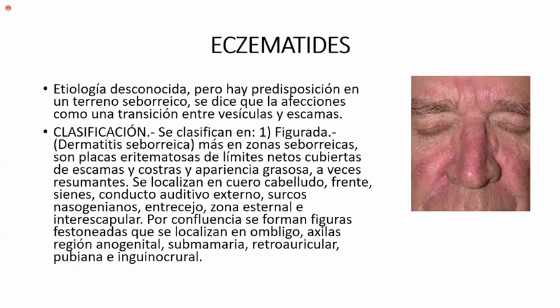A veces resumantes. Se localizan en cuero cabelludo, frente, sienes, conducto auditivo externo, surcos nasogenianos, entrecejo, zona esternal e interescapular. Todas estas zonas son más grasosas que el resto del cuerpo. Por confluencia, estos eritemas escamosos se juntan y forman figuras festoneadas que se localizan en ombligo, axilas, región anogenital, región submamaria, retroauricular, cubital e inguinocrural.